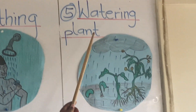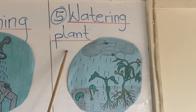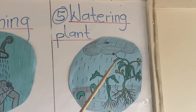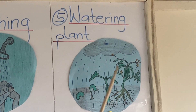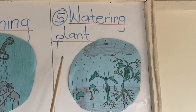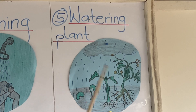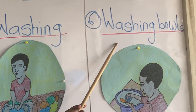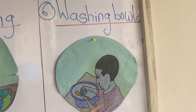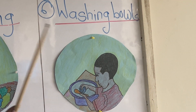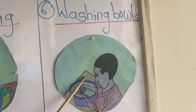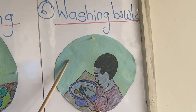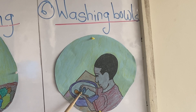Water is also used for watering plants. Rainwater falls on plants and helps them grow. Water is also used for washing bowls or utensils. After cooking or after eating, we use water to wash our bowls. You see the boy washing his spoon over here.